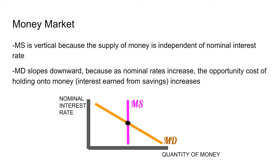Money demand slopes downward because as nominal interest rates increase, the opportunity cost of holding money — which is the interest earned from savings — increases, so people want to save instead of holding on to money. Note that on the y-axis of the money market you have nominal interest rate, and on the x-axis you have quantity of money.